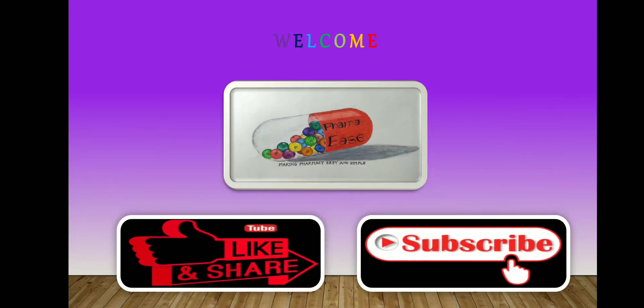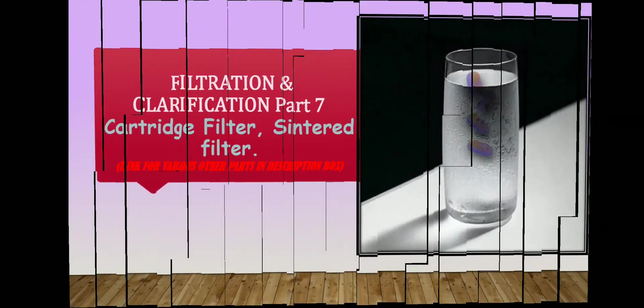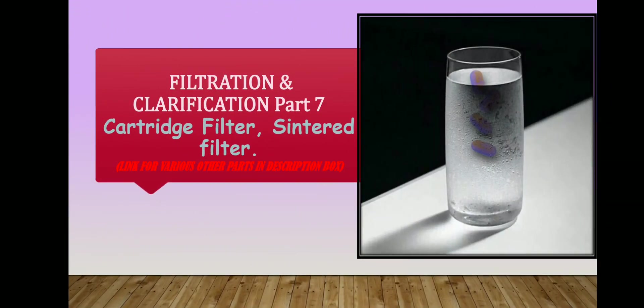Today we will discuss filtration and clarification, Part 7. Various topics including introduction, various factors, mechanisms, classification, and various equipment which are in your syllabus — whether for D-Pharm Pharmaceutical or B-Pharm Pharmaceutical Engineering — are already covered, and links will be in the description box. In Part 7 we will discuss Cartridge Filter and Sintered Filter.